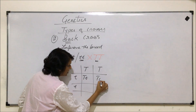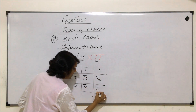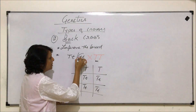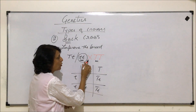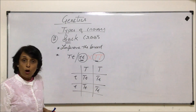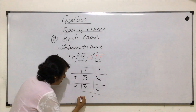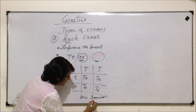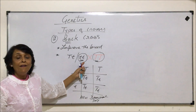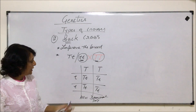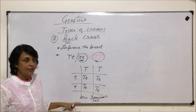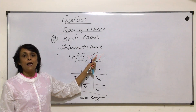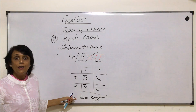If we talk of this cross — recessive with homozygous dominant — the homozygous dominant parent would produce gametes containing the dominant gene, and the other organism would produce gametes containing the recessive allele. In the next generation, the progeny will have at least one dominant trait. So we started with one parent as recessive, crossed it with the dominant parent, and in the next generation all were dominant.